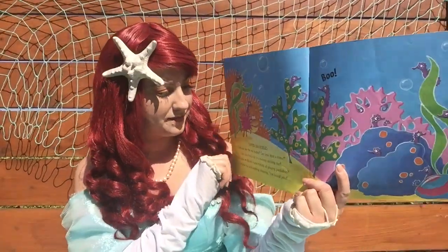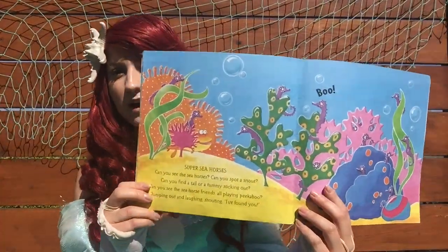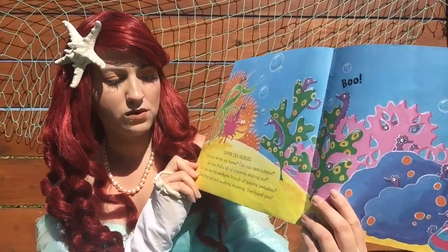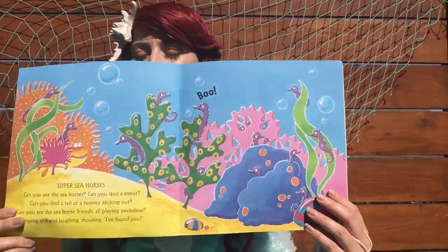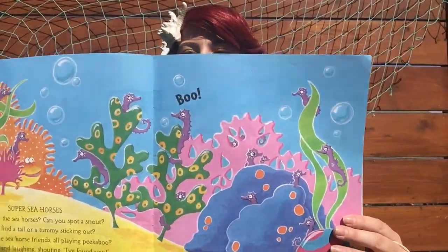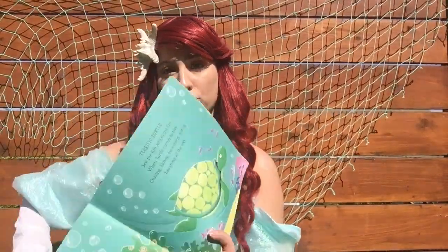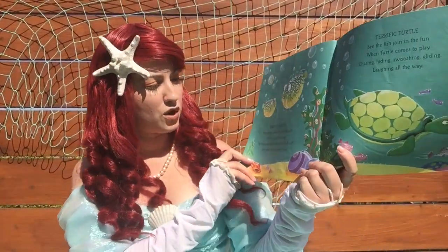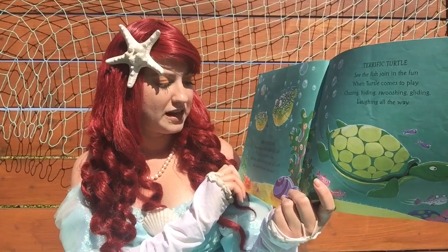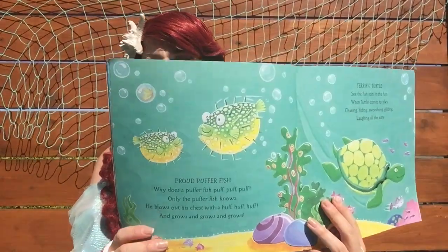Super Seahorses. Can you see the seahorses? Can you spot a snout? Can you find a tail or tummy sticking out? Can you see the seahorse friends all playing peek-a-boo, jumping out and laughing, shouting, I found you! Proud Pufferfish. Why does a pufferfish puff, puff, puff? Only the pufferfish knows. He blows out with his chest with a huff, huff, puff, and grows and grows and grows.